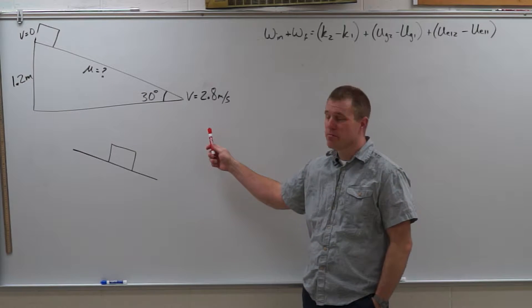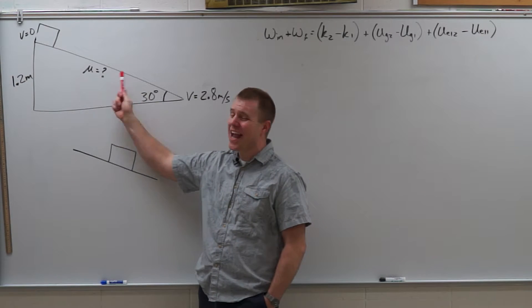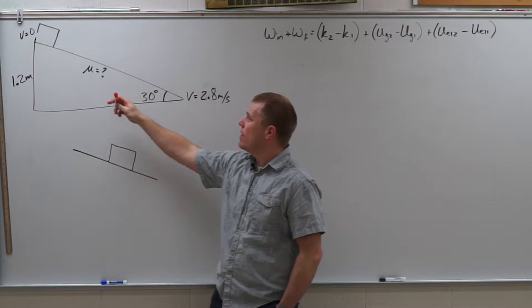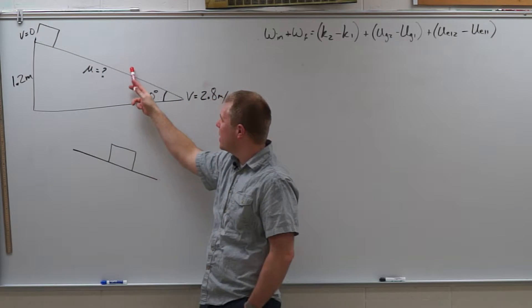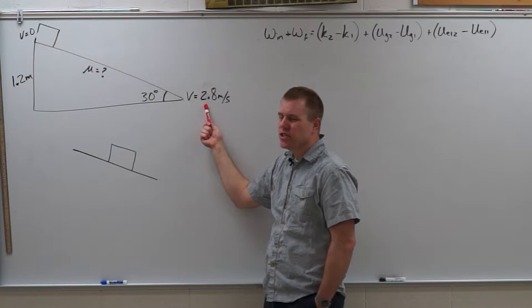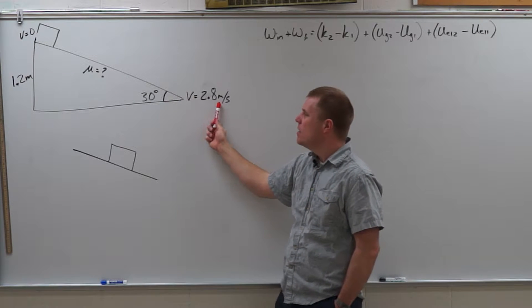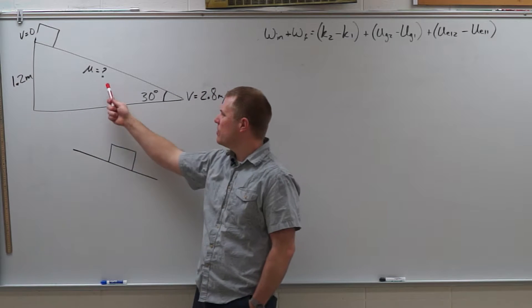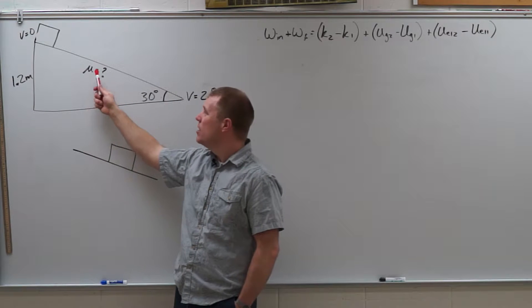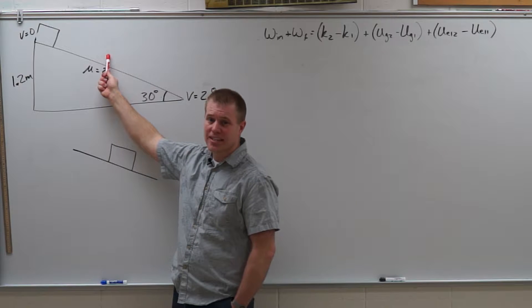Alright, we're going to do another work kinetic energy theorem problem. This time there's going to be friction and we're on an incline. So I have a block of mass m at the top of an incline. It's going to slide down that incline speeding up until it reaches a final speed at the bottom of 2.8 meters per second. The incline is 1.2 meters high and has an angle of 30 degrees, and we want to figure out what is the coefficient of friction between the surface and the block.